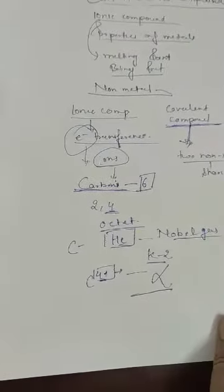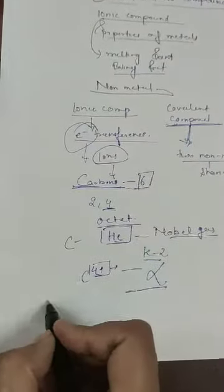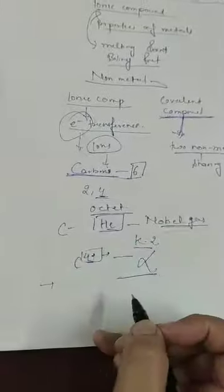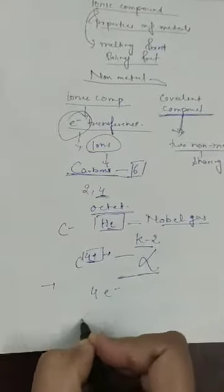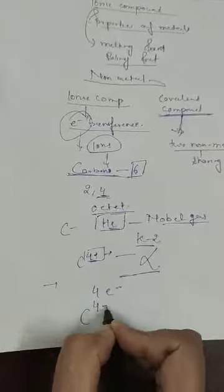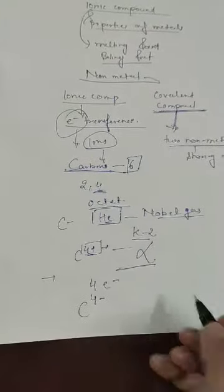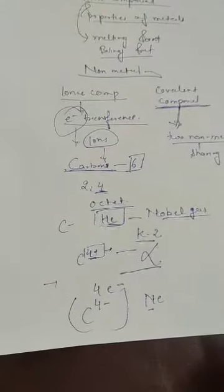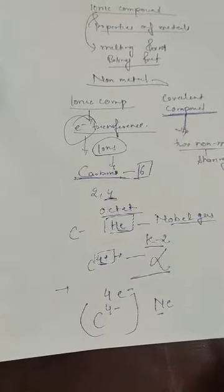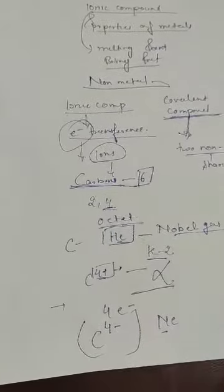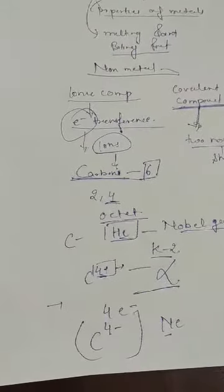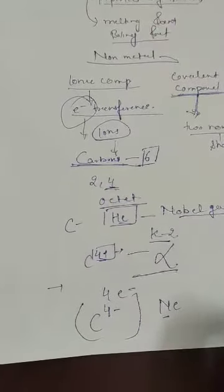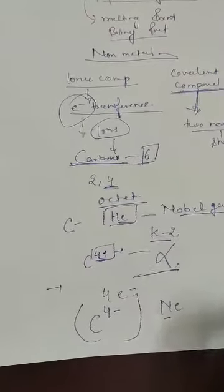If carbon gains 4 electrons to complete eight electrons in its shell, it would have a C4− charge. But in this case also, the energy required is expected to be very high, and the carbon size causes problems.